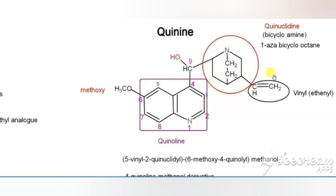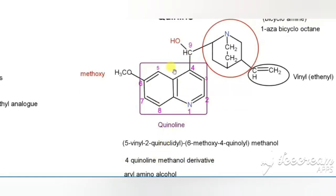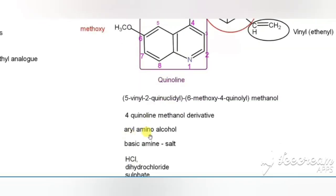Now we will see the chemical name of quinine. The parent chosen is methanol (CH₃OH), also called carbinol. With the methanol, the quinuclidine and quinoline are attached. The vinyl is in the fifth position, so that gives us 5-vinylquinuclidin-2-yl. The methoxy quinoline portion gives 6-methoxyquinolin-4-yl methanol. Since it contains nitrogen and alcohol, it is called an aryl amino alcohol derivative. It is a basic compound available as a salt.